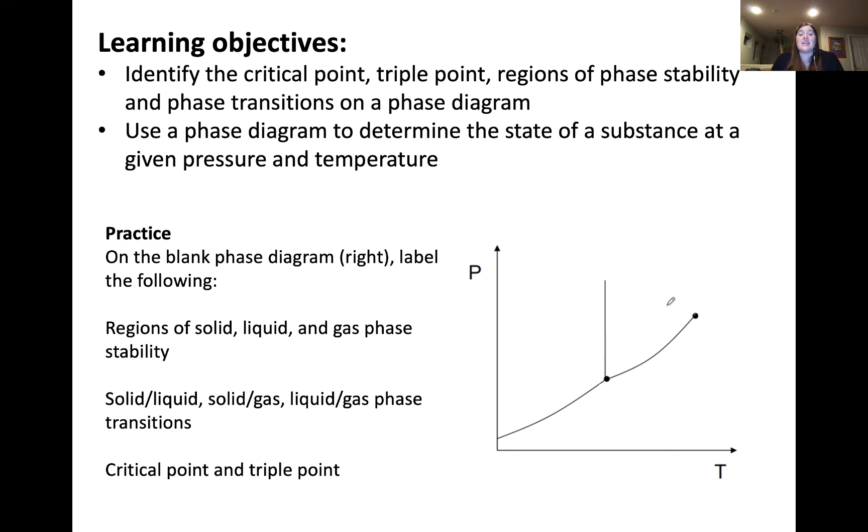In this video, we've discussed the key objectives of identifying regions of the phase diagram, as well as using the phase diagram to determine particular states of a substance at a given pressure and temperature. Here's a blank phase diagram for you to practice with. Try to label these regions shown below on the blank diagram. You can always check your work against the phase diagram I showed earlier in the video. Thanks for watching, and I'll see you in the next one.